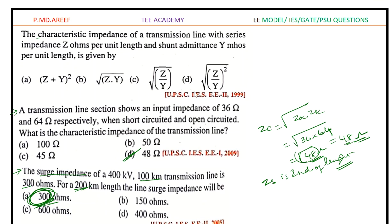Question 3: The characteristic impedance of a transmission line with series impedance Z ohms per unit length and shunt admittance Y siemens per unit length is given by Zc = √(Z/Y). Answer: option C. Thank you for watching — please subscribe to my channel and share with your friends. Have a nice day!